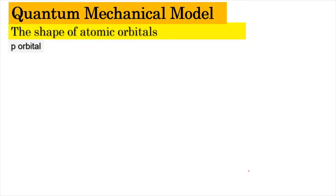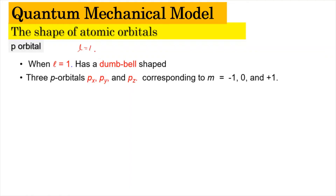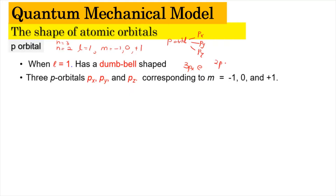The P orbital occurs when L is equal to 1 and has a dumbbell shape. When L equals 1, there are three possible values of M: negative 1, 0, and plus 1. For this reason, the P orbital has three subshells: Px, Py, and Pz. The value of n can be 2 or 3, so we can have 2Px or 3Px, for example, with the size depending on the energy level.